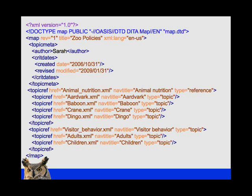This is the source code for a map file. Not too bad — you've got the XML declaration at the top and the doc type, which you can pretty much ignore. Then you've got the map itself and the title. The 'zoo policy' you see up there is going to be the title of the map file, which means then the title of the document or deliverable, whether it's help or a book or whatever. There's a section called Topic Meta, which allows you to put in things like the author or authors, when something was created, when something was revised, copyright, and those types of things.